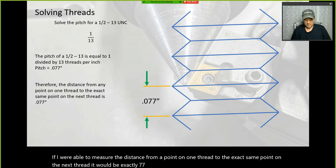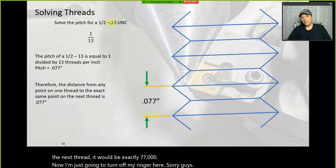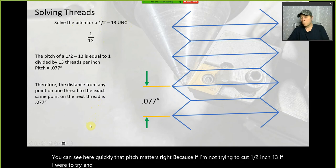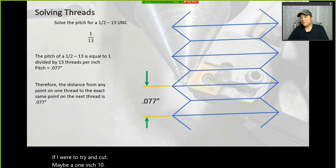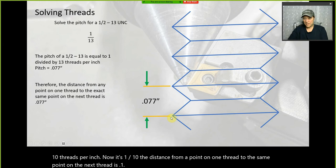Pitch matters. If you were cutting a one-inch 10 thread — 10 threads per inch — it's one divided by 10, so the distance from one thread to the next is 0.1. Pitch matters, we need to be able to solve it, and it's directly related to the number of threads.